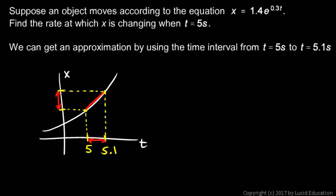So let's find these values. Let's find x when t is five, and we write that like this, x of five, and we just put in the numbers. 1.4 times e to the power of 0.3 times 5, and we do that on the calculator, and it comes out to 6.274. And we find x of 5.1. And again, on the calculator, we just calculate 1.4 times e to the power of 0.3 times 5.1, and it comes out to 6.465.